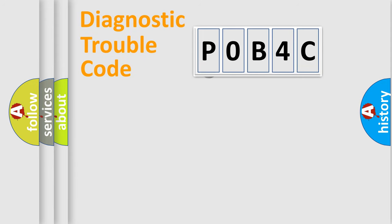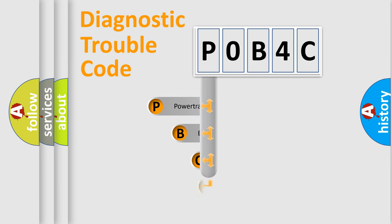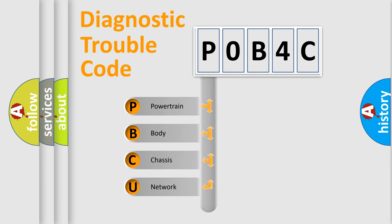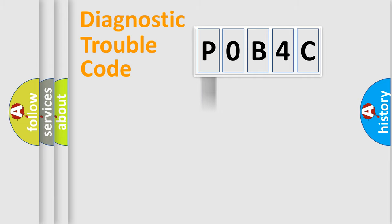First, let's look at the history of diagnostic fault code composition according to the OBD-2 protocol, which is unified for all automakers since 2000. We divide the electric system of an automobile into four basic units: Powertrain, Body, Chassis, and Network. This distribution is defined in the first character of the code.